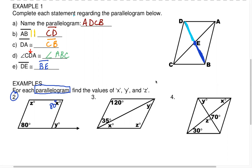We also learned that consecutive angles are supplementary. So going in a straight line here, they have to add to 180. If I have 80, then Z has to be 100 because 80 plus 100 equals 180. Going the other way, 80 plus what gives you 180? 100. Double check — opposite angles are congruent: 100 and 100. Check.